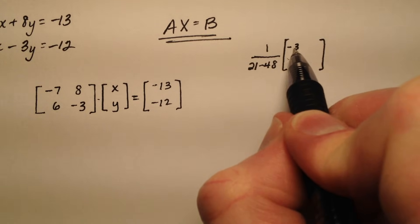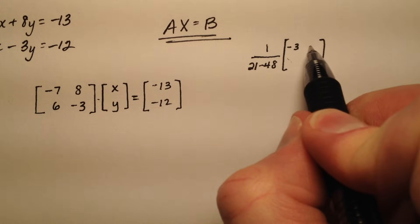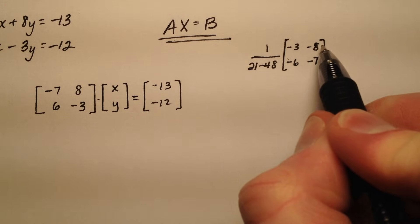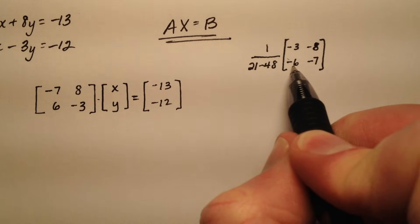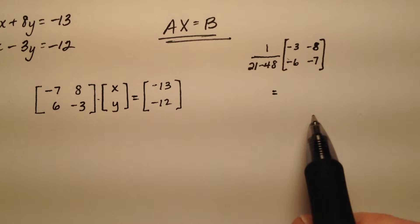On the inside here I'm going to switch the order in my main diagonal so negative 3 and negative 7, and then I'm going to negate both of the terms in the minor diagonal. So instead of positive 8 it will be negative 8 and instead of positive 6 it will be negative 6.